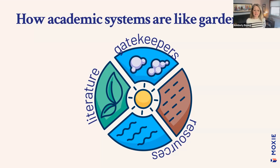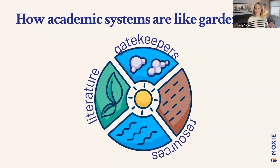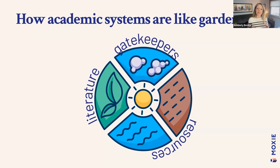Gardening works for a lot of things because a lot of things are a system, and gardening is definitely a system. In this system, we have the plants, the weather, the soil, the water, and of course we have the gardener — and the gardener has tools. In this analogy, the gardener is the researcher, and I'm going to make comparisons to other things we use in our academic systems.